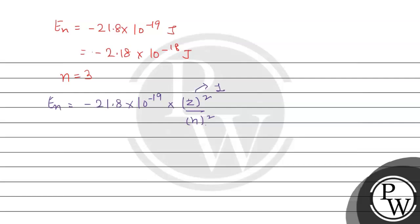So this will be -21.8 × 10^-19 divided by 9. We had this for the first orbit.